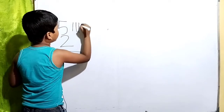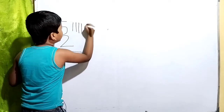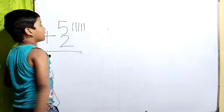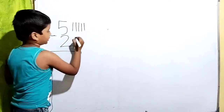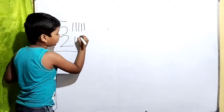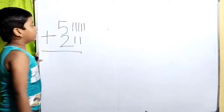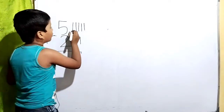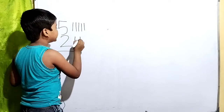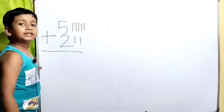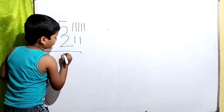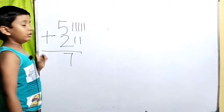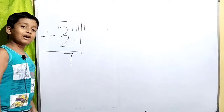One, two, three, four, five — five lines. And I have to draw two lines: one, two. Now we have to count: one, two, three, four, five, six, seven — seven lines. So here is our answer: seven. Look friends, how easy!